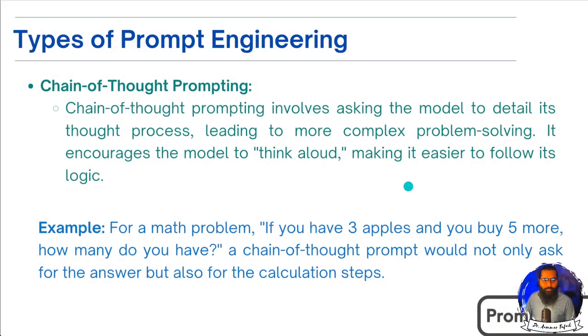In Chain of Thought, the model tells you its thought process — why it determined the capital of France is a particular city, tracing through its data and reasoning to arrive at the answer. It is like giving a student a test and asking them not just for the answer but also how they thought about it. If this is clear, please write in the comment section. Those who have liked, shared, and subscribed, please go ahead. This is part of a crash course linked to a 6-month course in the description.